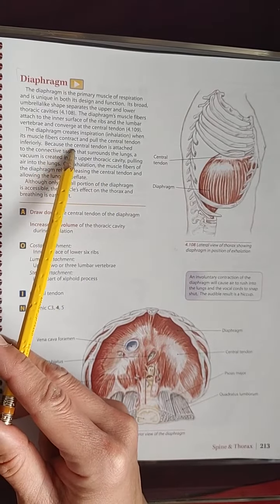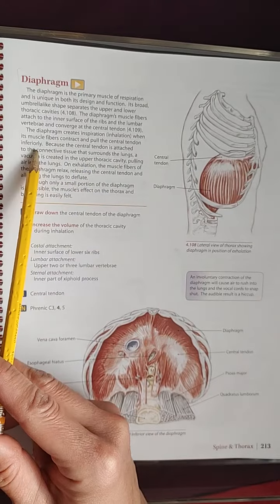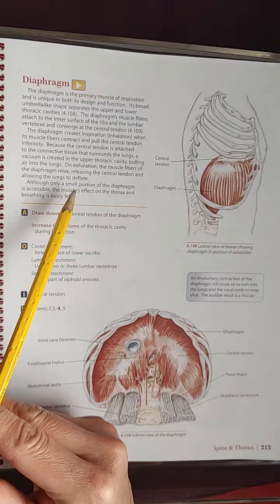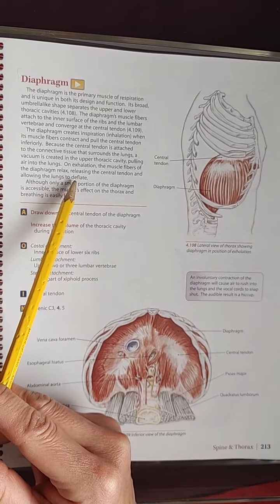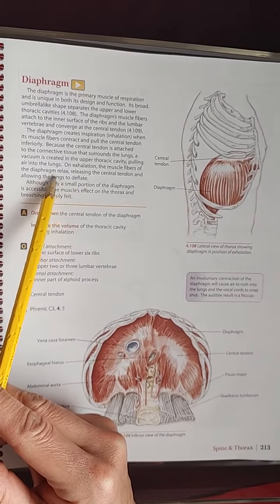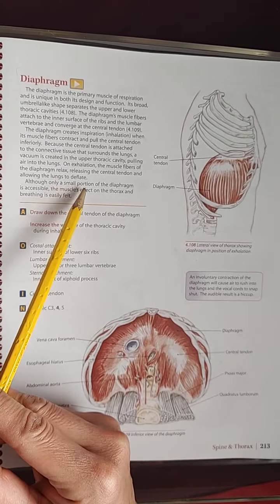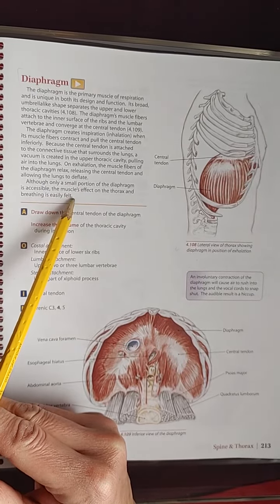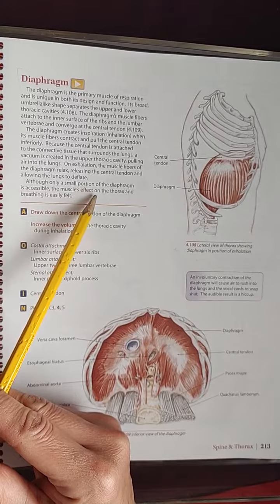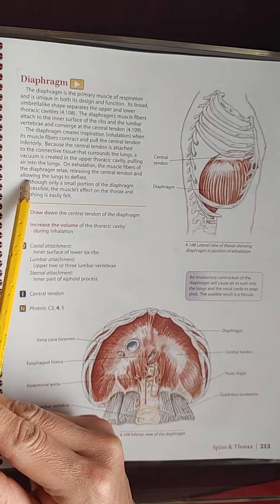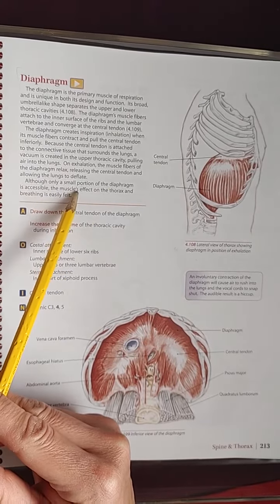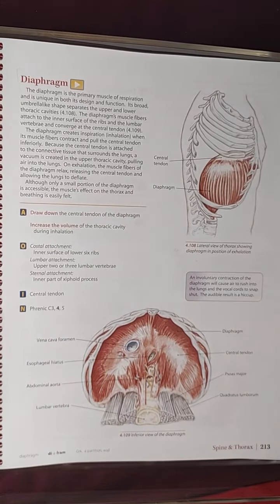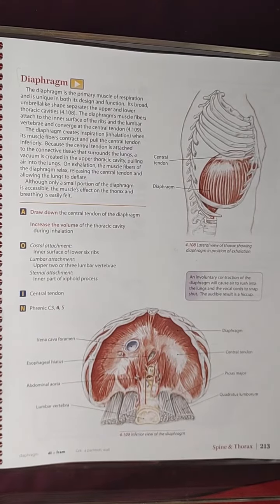The diaphragm creates inspiration and inhalation when its muscle fibers contract and pull the central tendon inferiorly. Because the central tendon is attached to the connective tissue that surrounds the lungs, a vacuum is created in the upper thoracic cavity, pulling air into the lungs. On exhalation, the muscle fibers of the diaphragm relax, releasing the central tendon and allowing the lungs to deflate.